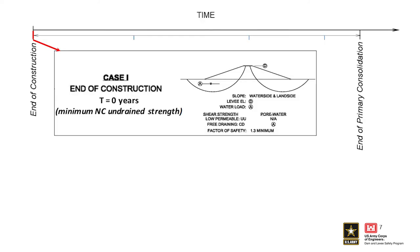These next few slides come from the Levee Design and Construction Manual, EM 1913, and walk through a couple of the conditions we think about in looking at slope stability analysis. The end-of-construction case, T equals zero, construction just completed: here we want to use a normally consolidated undrained strength assumption for low-permeability soils. If the soils are free-draining sands and gravels, we would use drained strength.